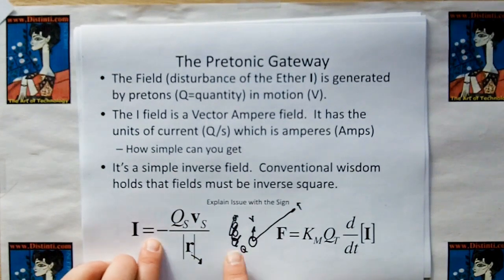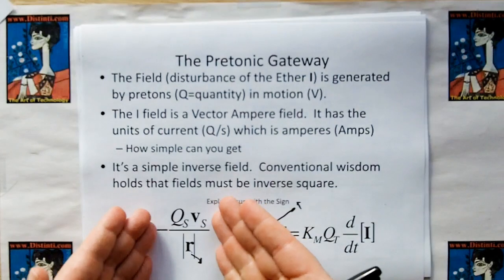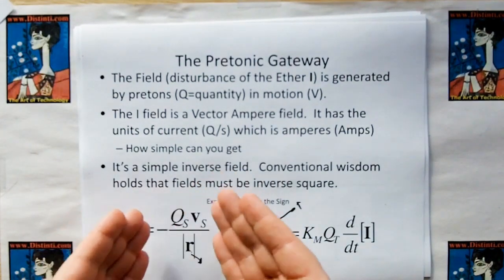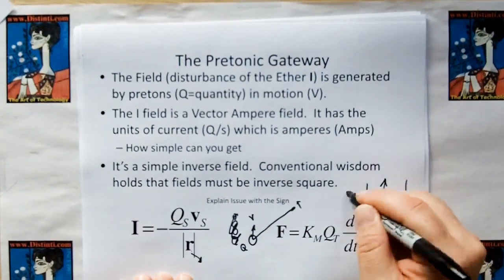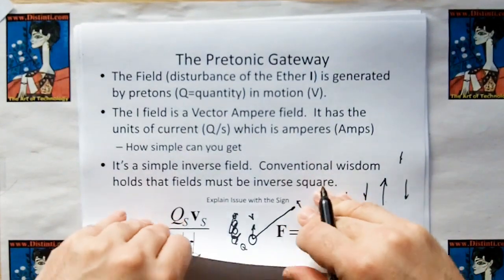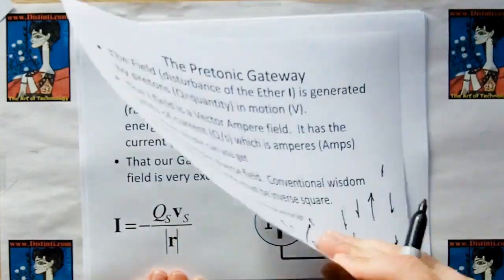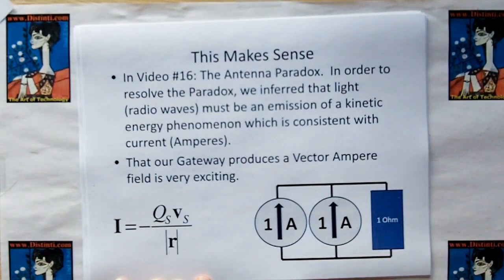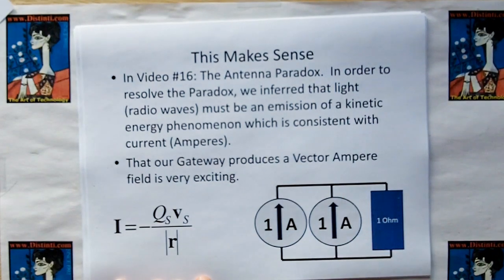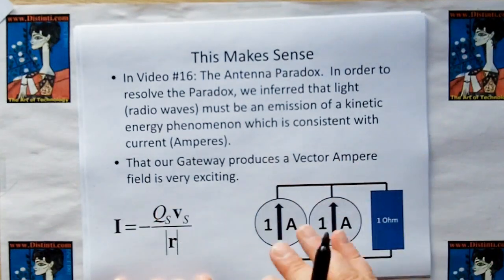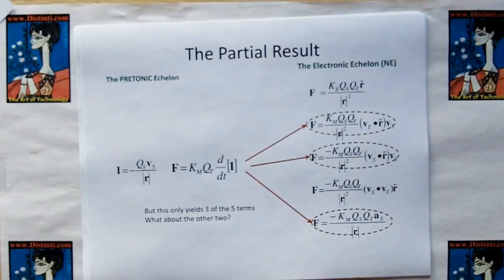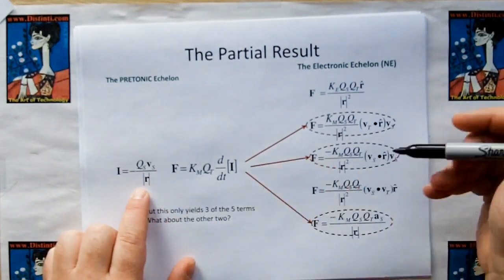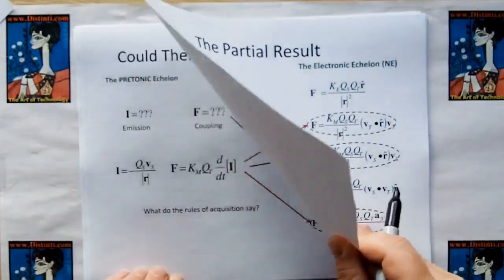And then the way you can determine the coupling is you take the time derivative of I, which this part has an element of the target in it because it's for the distance from the source to the target, and that's how you couple the energy out to find out what the force will be on the target charge. Now the sign, there's an issue with the sign. Do we put the sign here, or do we put the sign here? I don't know. I put it over here because I figure this has to be, excuse me, the negative of the direction of the current. It has to be negative because if you had a current in motion this way, your field should be the opposite direction. Kind of gives the balance to the emission. So that's where I'm putting it now until we find out something different. That's where it's going to stay. And now this all makes sense because in video number 16, in the antenna paradox, in order to resolve the paradox, we inferred that light, radio waves, must be an emission of kinetic energy phenomenon which is consistent with amperes. This is the little diagram we came up with to explain, to resolve the paradox in the energy coupled into a target antenna. And that our gateway produces vector ampere fields is very exciting.